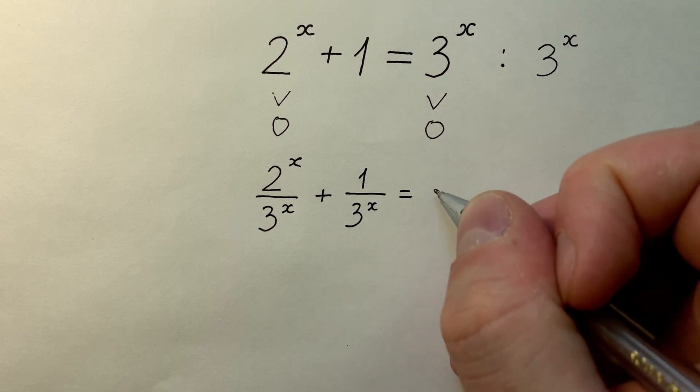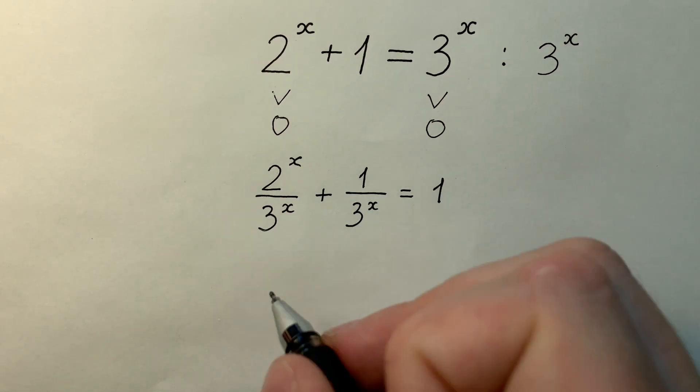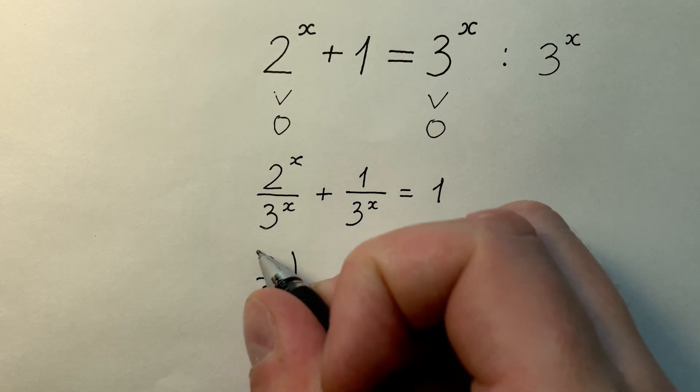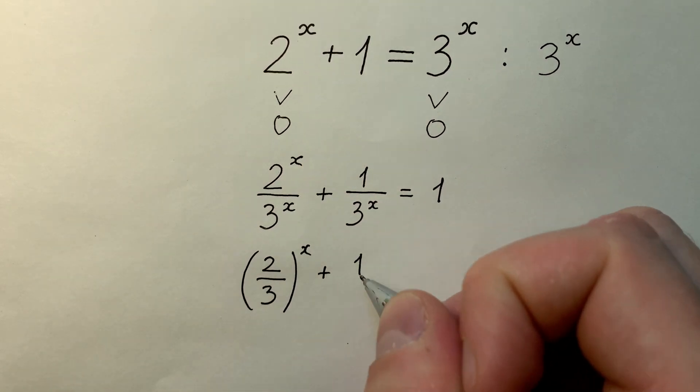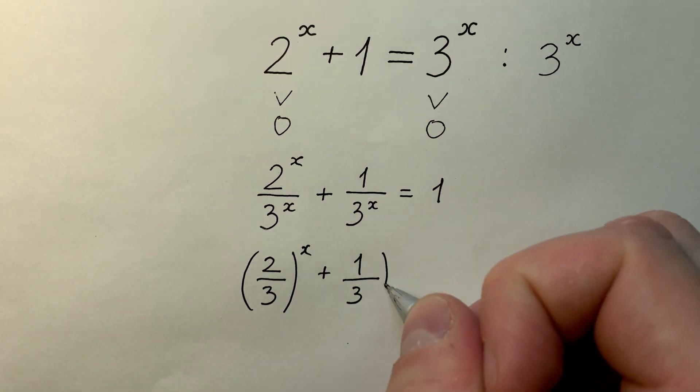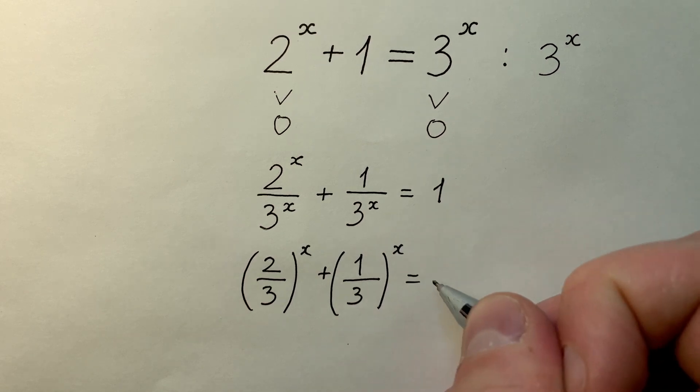And it equals 1. Or we can write it like (2/3)^x plus (1/3)^x, and it equals 1.